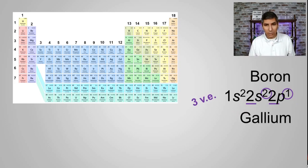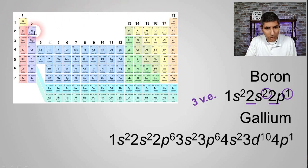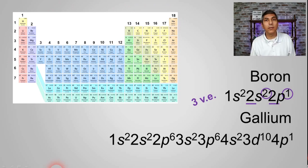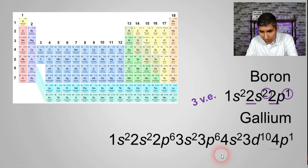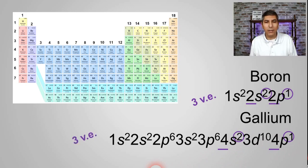Let's try gallium. Its electron configuration is 1s2, 2s2, 2p6, 3s2, 3p6, 4s2, 3d10, and 4p1. To calculate the number of valence electrons, we find the highest coefficient in the configuration, which is 4, and add those superscripts together: 2 plus 1 equals 3. So gallium has three valence electrons.